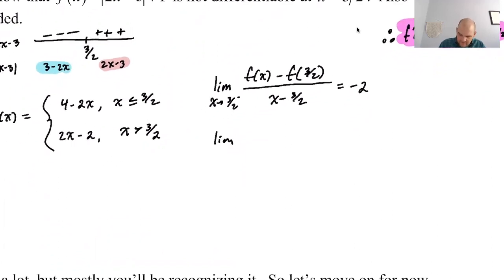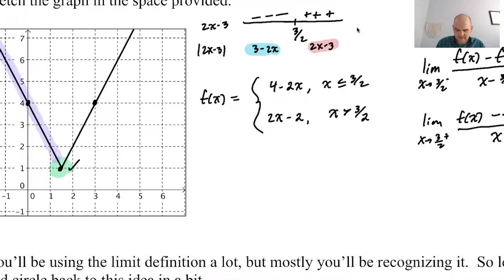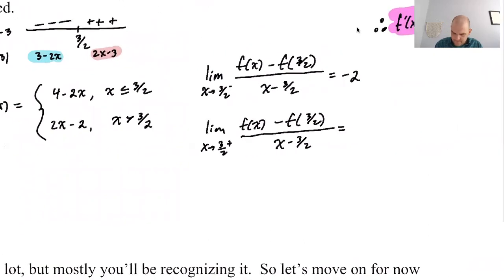Now the other one: the limit as x approaches 3 halves from the right of f of x minus f of 3 halves over x minus 3 halves. Approaching 3 halves from the right, the slope of that line is 2 — from the piecewise function, the piece is 2x minus 2. So this limit equals 2.